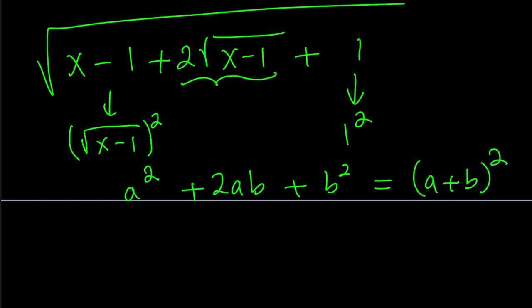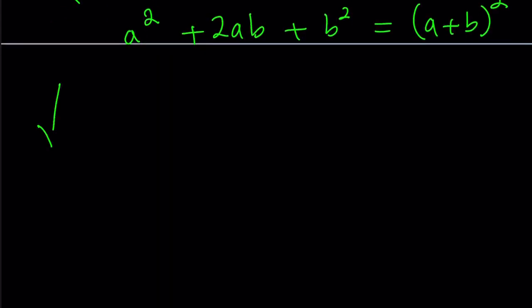Awesome. Let's go ahead and simplify this then. So I got square root of square root of x minus 1 plus 1 squared. How do you square root something squared? In other words, what is square root of a squared?